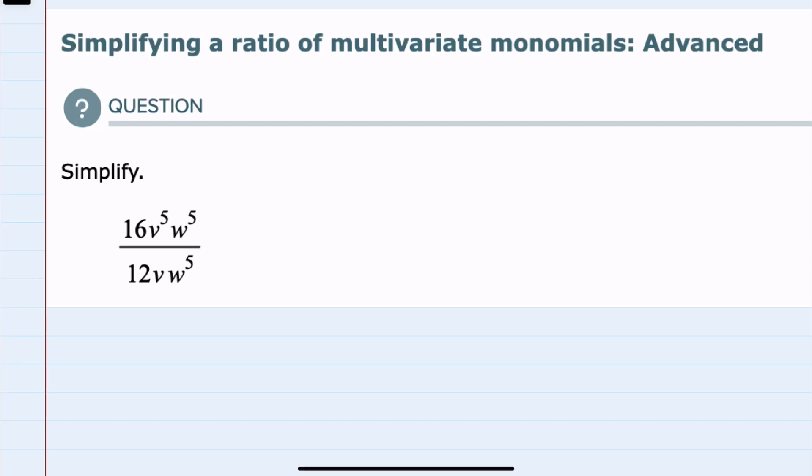In this video, I'll be helping you with the Alex problem type called Simplifying a Ratio of Multivariate Monomials Advanced. We're asked to simplify this expression, and to do so, we'll work with each similar piece to simplify them.